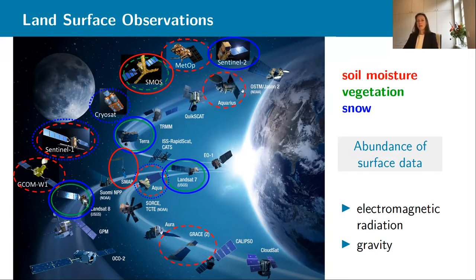The majority, almost all of these missions use electromagnetic radiation to see what's happening in the land surface. There's one notable exception, and that's the GRACE mission, which uses gravity — the pull of the Earth on the satellite.